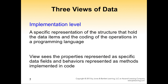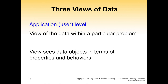To put Abstract Data Types into context, we need to look at how we view data. In computing, we view data from three perspectives: the application level, the logical level, and the implementation level. At the application level, which is usually called the user level, we view the data within a particular problem. We just see the behavior of the abstract data type, how inputs are turning into outputs. We see it from the user perspective.